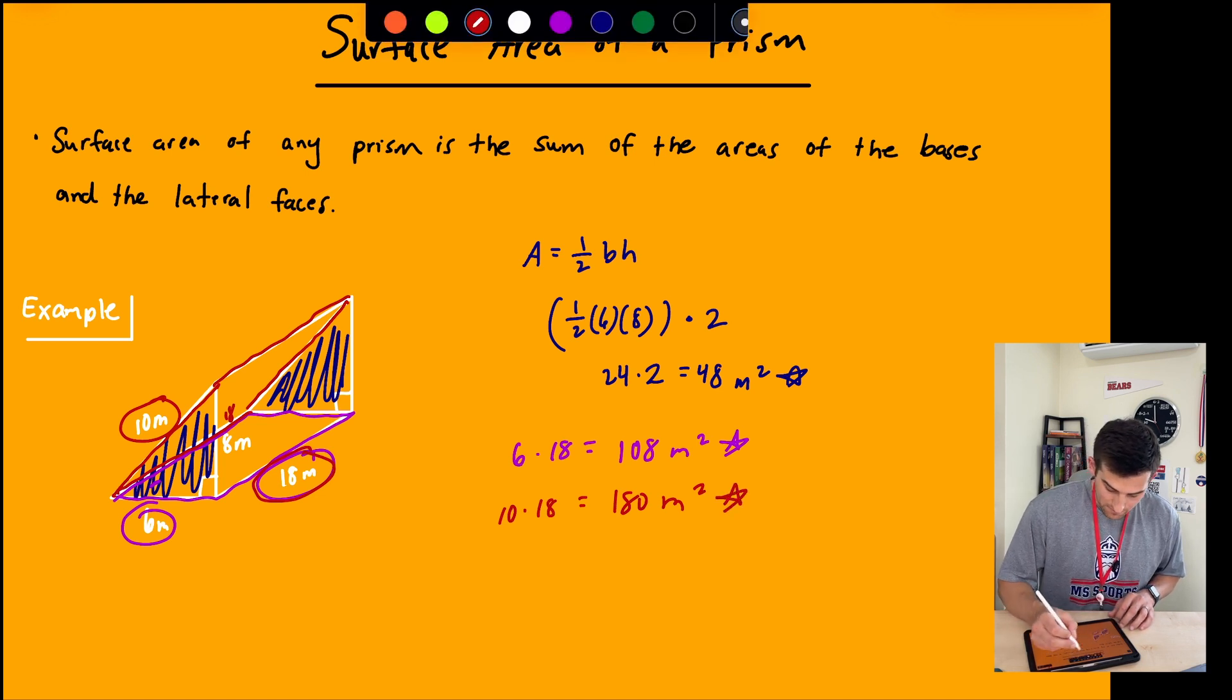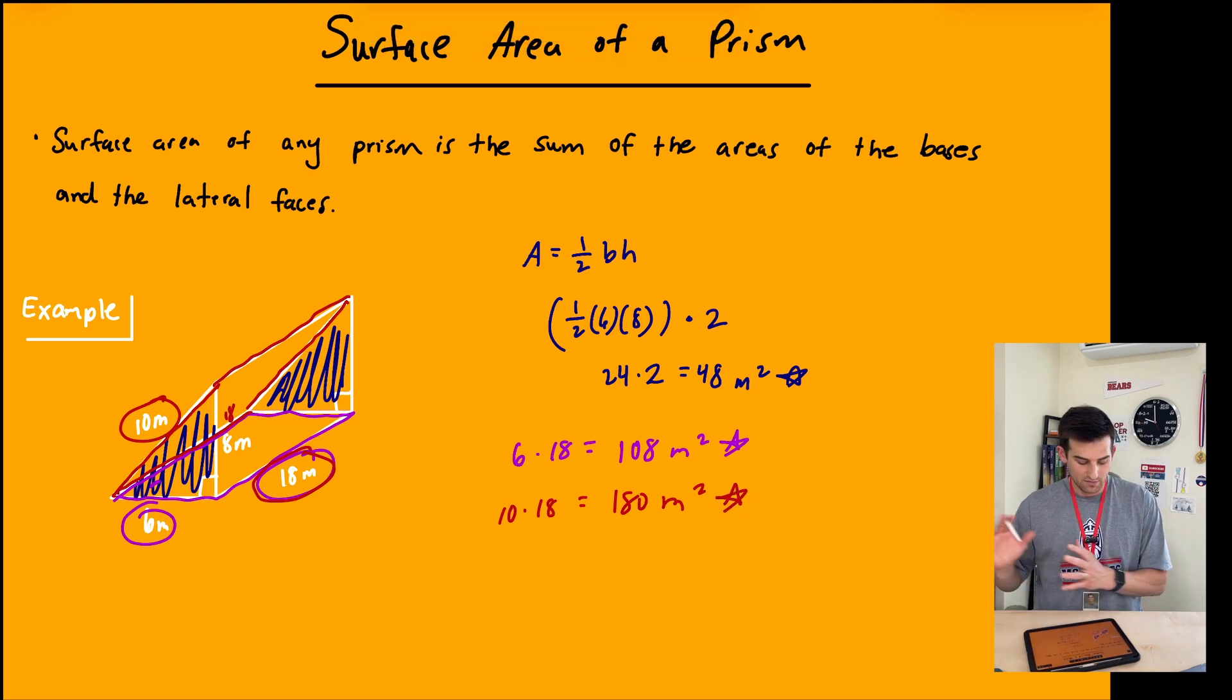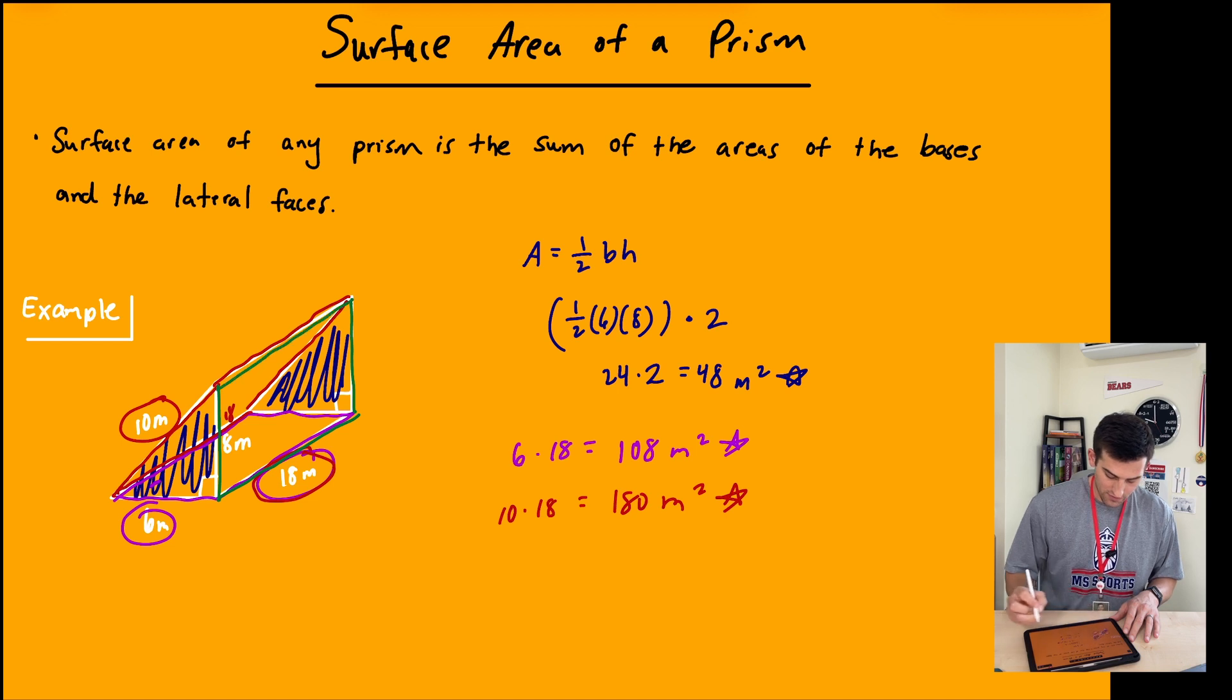Our last side is basically the right side. That would be like here, and then here, and then here, and then right there. So the green one. That's going to be eight by 18. Eight times 18 gives us 144.